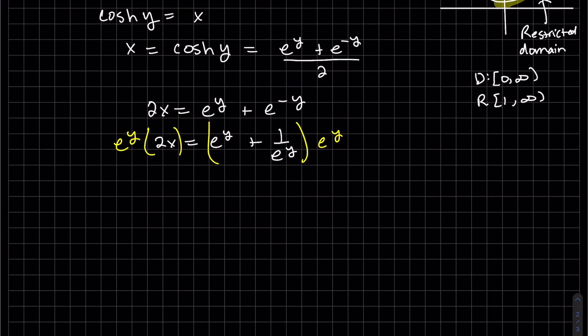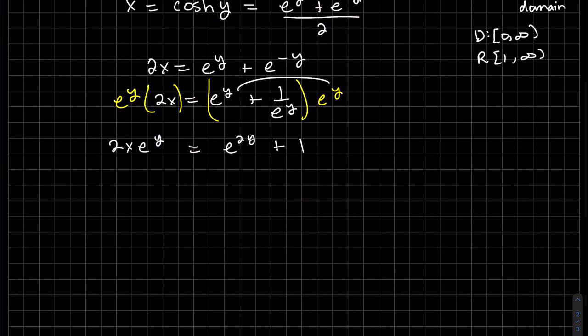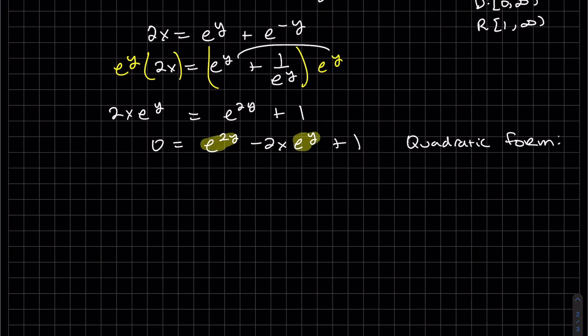Clear a fraction. And we do have e to the 2y and e to the y. Looks kind of like a quadratic form. So let's get zero on one side. Put that term in the middle. So we're going to let, we're going to solve for that unknown, which is my quadratic form, e to the y using the quadratic formula.